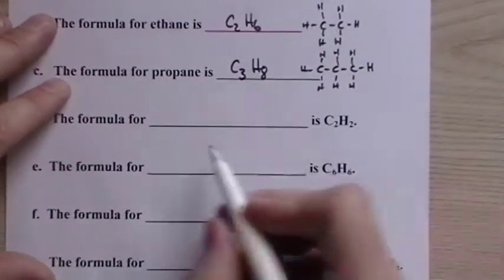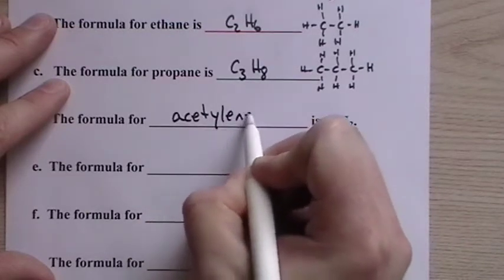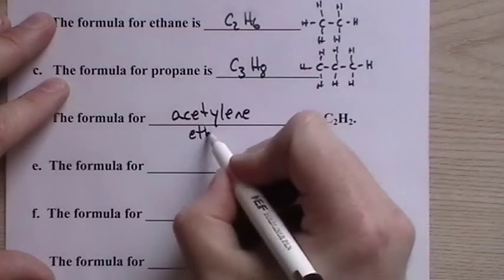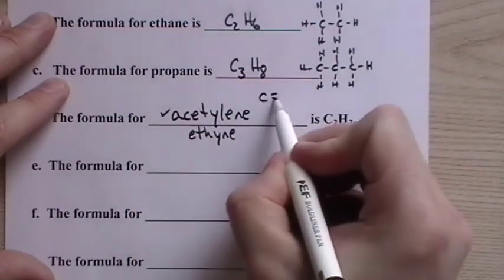The formula for blank is C2H2 and this is acetylene, also called ethyne. But this is by far and away the more common name and it has a triple bond.